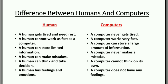A human can think and take decisions. A computer cannot think on its own. A human has feelings and emotions. A computer does not have any feelings.